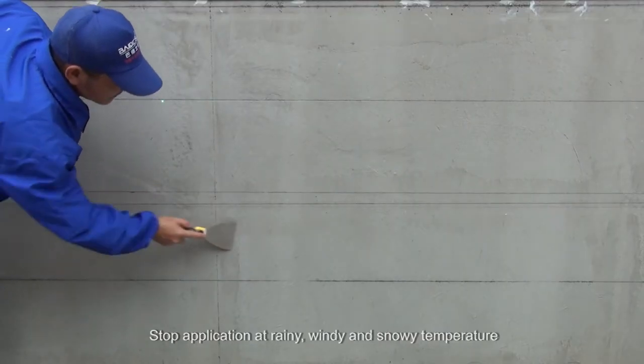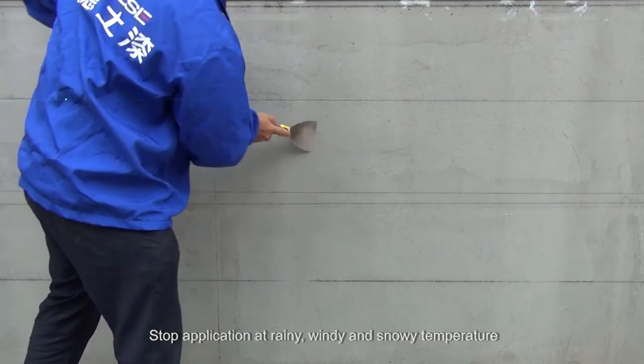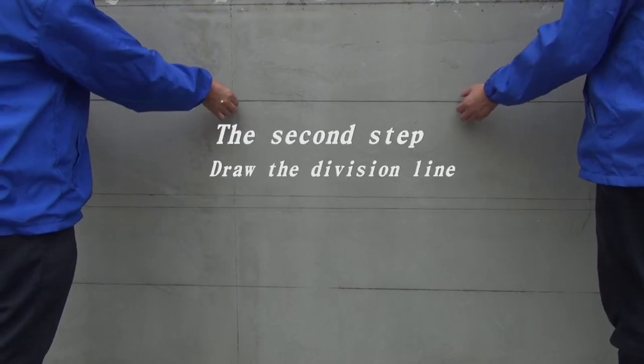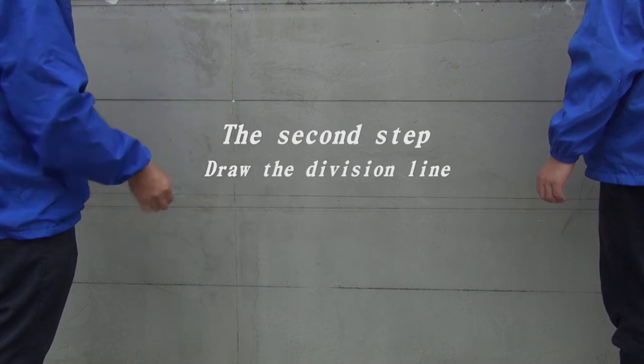The second step: draw the division line. Draw the division line with thread horizontally and vertically based on the wall size and aesthetics.